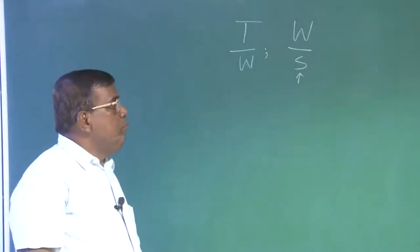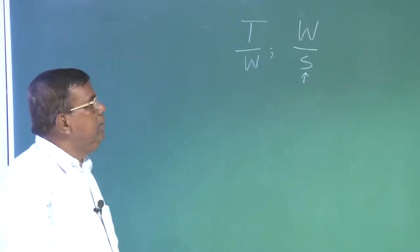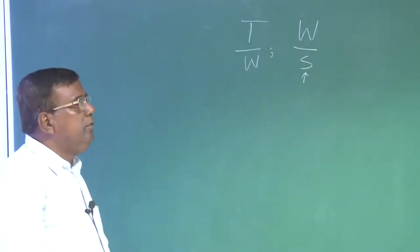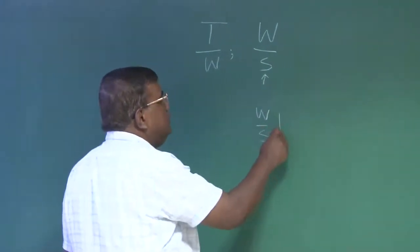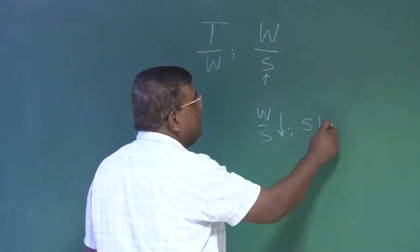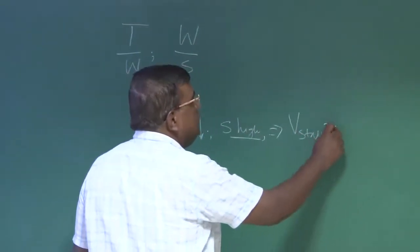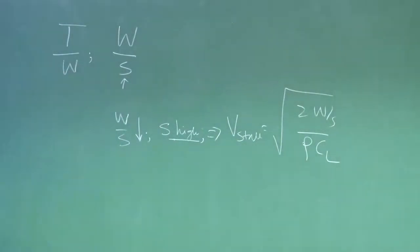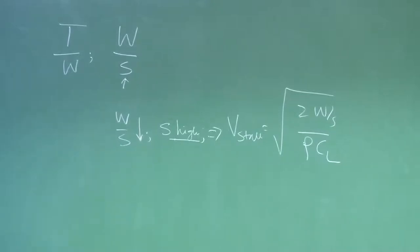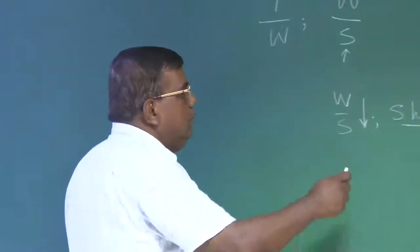That is a conflict. For a designer, there will be many times a conflict to arrive at a combination of T by W and W by S. I want W by S to be low, that means S is relatively high. This amounts to my V stall — which is √(2W/SρCL) — being low if W by S is less. From a designer's perspective, if a large area of wing is there, it will produce larger lift for a given dynamic pressure and angle of attack. The moment W by S is low, we have this advantage.